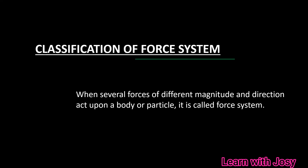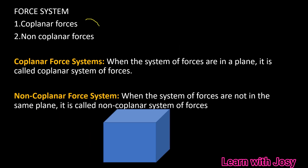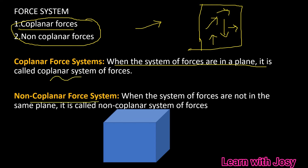This is the classification of the force system. One type is the coplanar force system, where all forces act in the same plane — for example, forces acting on a paper, board, or slate. The other type is the non-coplanar force system, where forces act in different planes — for example, forces acting on the three different faces of a cube.